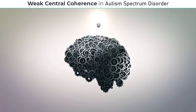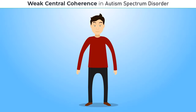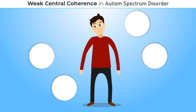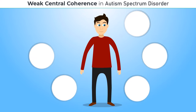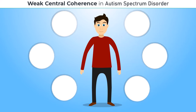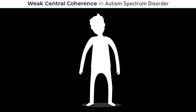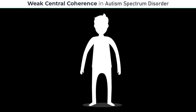Let's start by defining weak central coherence. Weak central coherence is a cognitive processing style characterized by a tendency to focus on details rather than seeing the overall context. People with weak central coherence often struggle to recognize patterns, see the bigger picture, or integrate information from different sources.